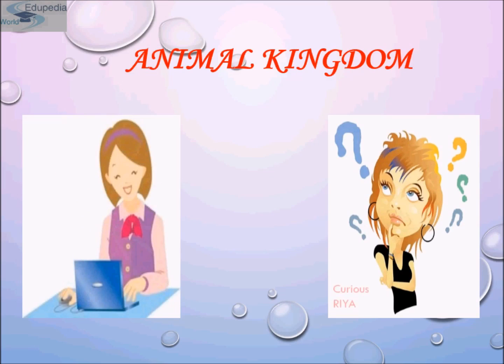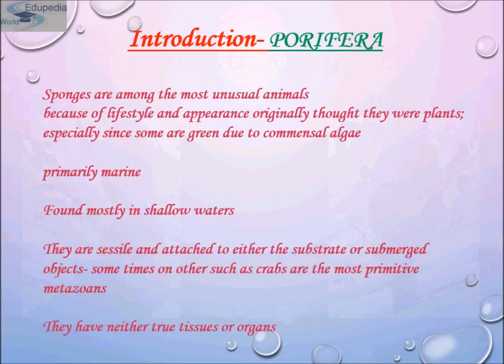Members of Phylum Porifera are commonly known as sponges. They are generally marine and mostly asymmetrical animals. Sponges are a diverse group with about 5,000 species known across the world. They are primarily marine, but around 150 species live in freshwater.